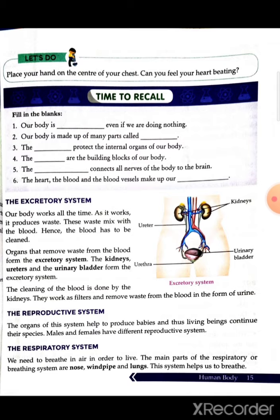The next important organ system is the reproductive system. The organs of this system help to produce babies, and thus living beings continue their species. Males and females have different reproductive systems.